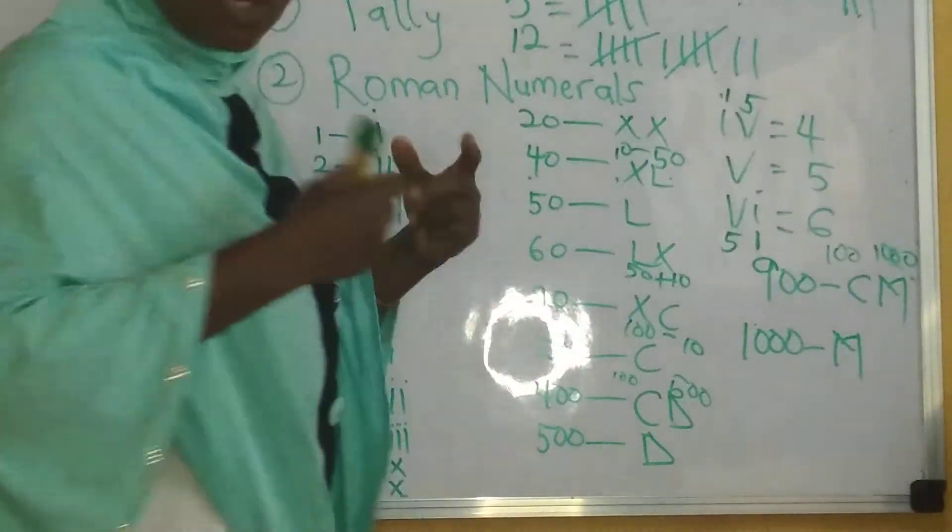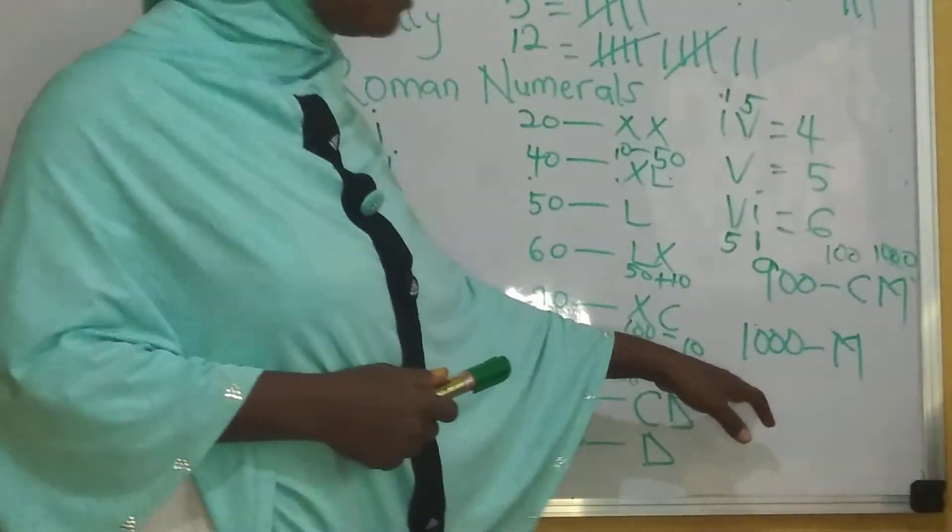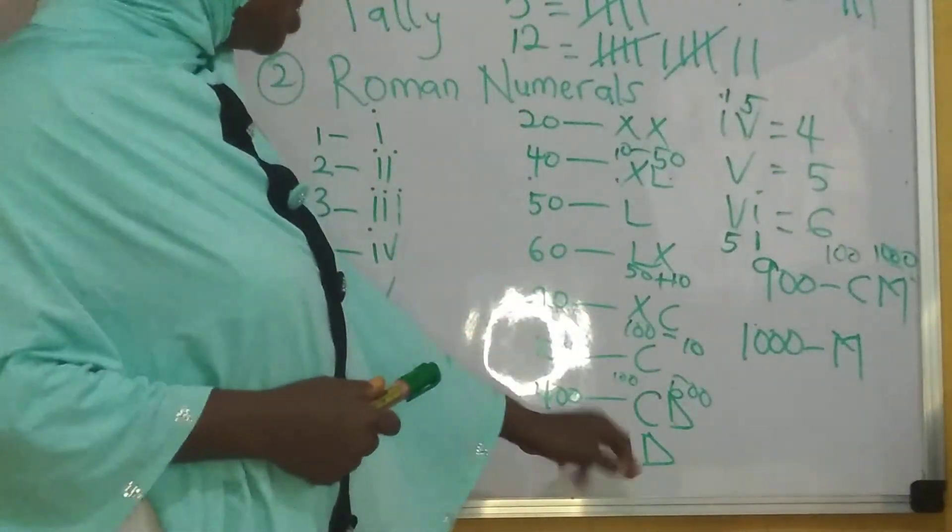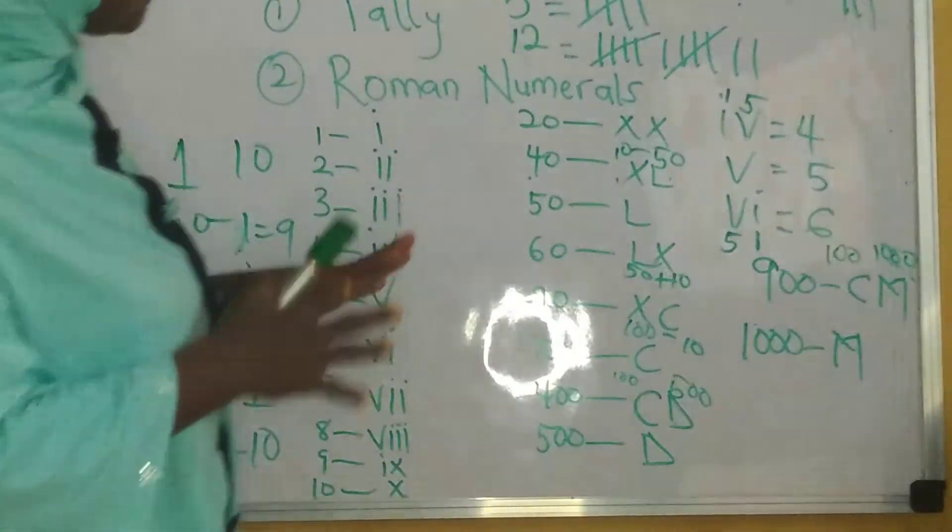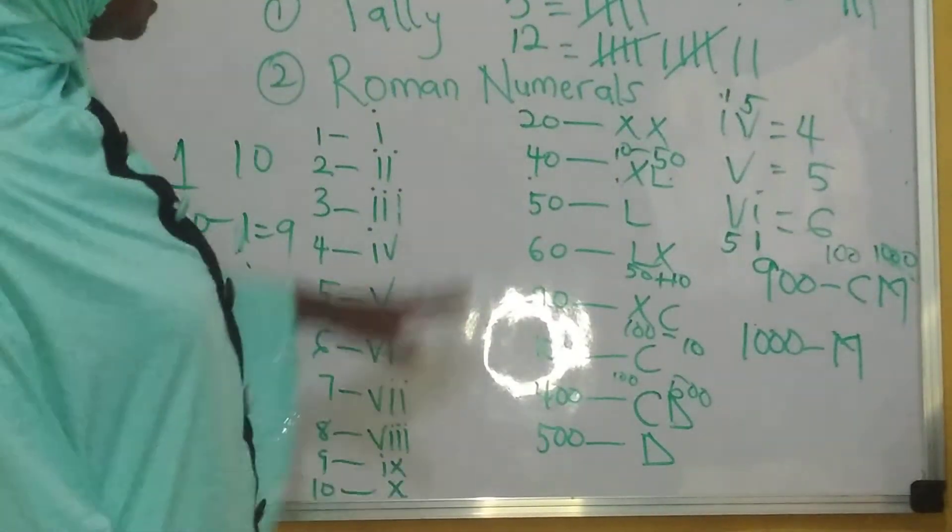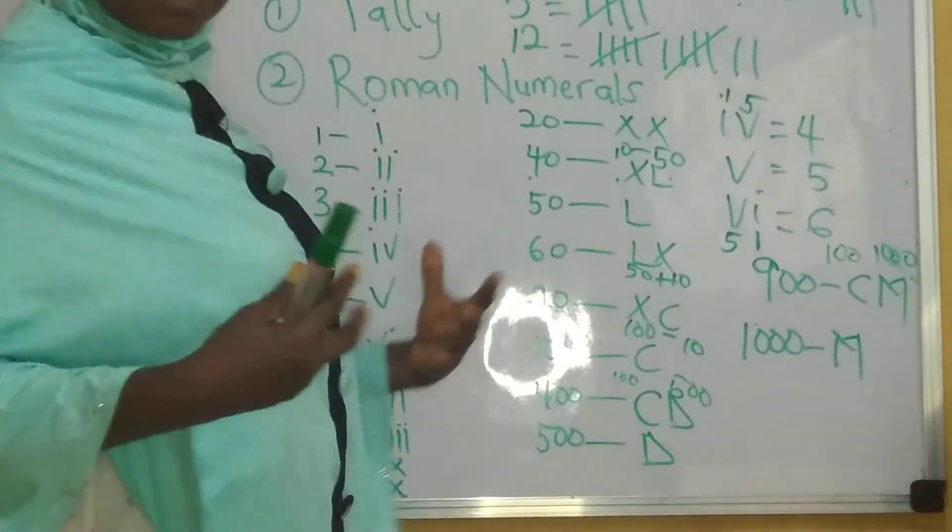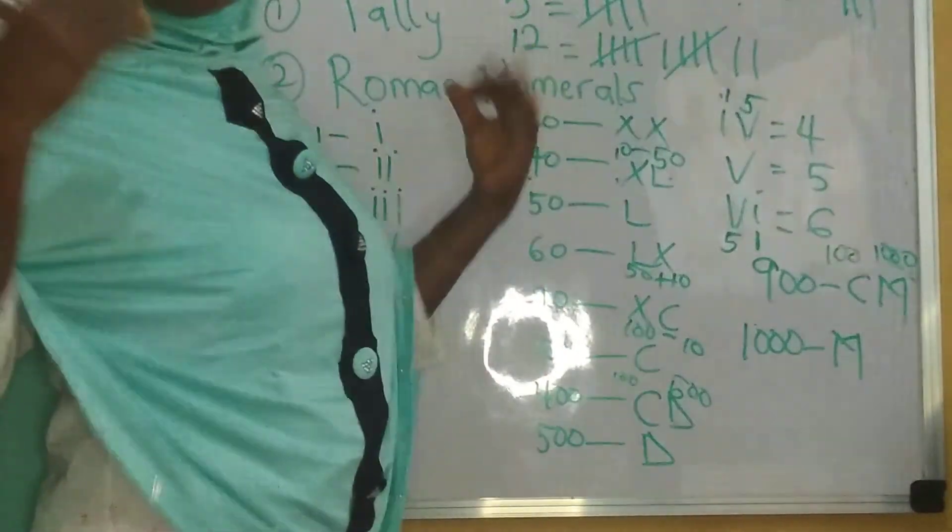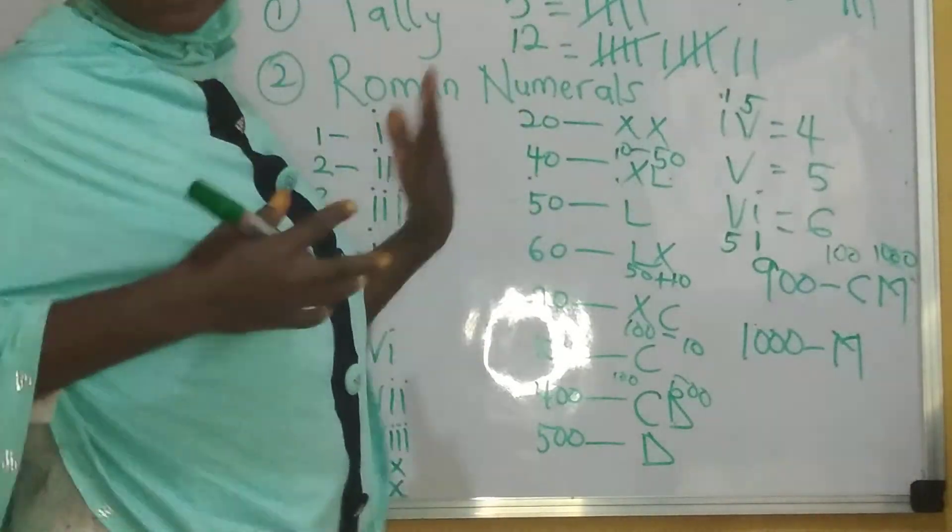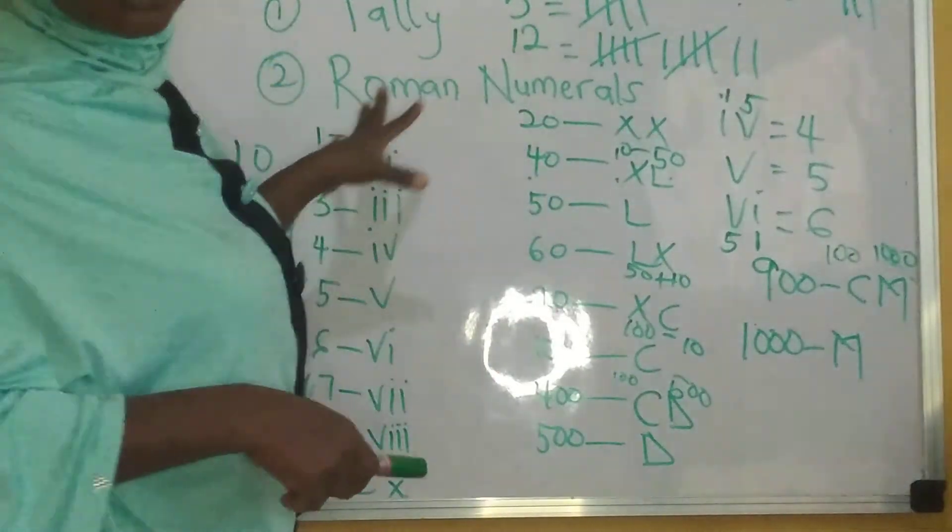So basically, I am not the one that manufactures all these fundamental symbols. So please try as much as possible to learn 1 to 10, 20, 40, 50, all of these, 900, 1000. Try as much as possible to memorize them and to know them offhand so that it's going to be easy for you as time goes on.